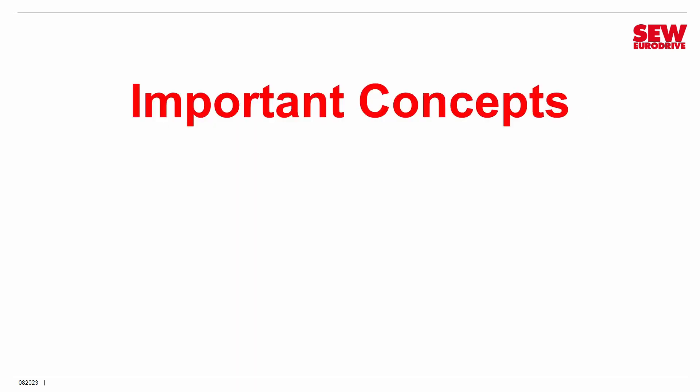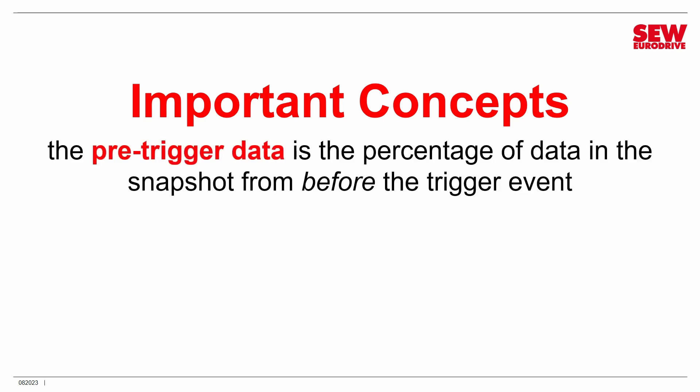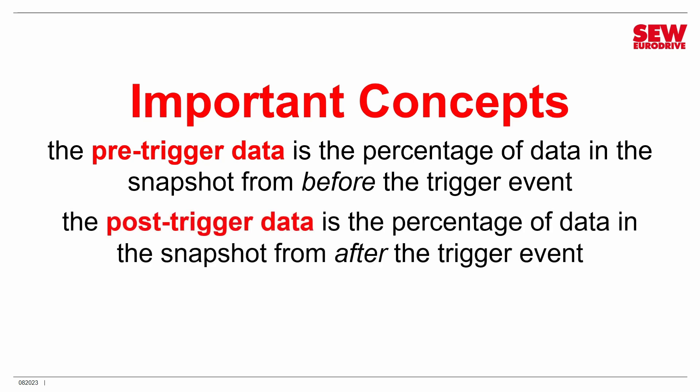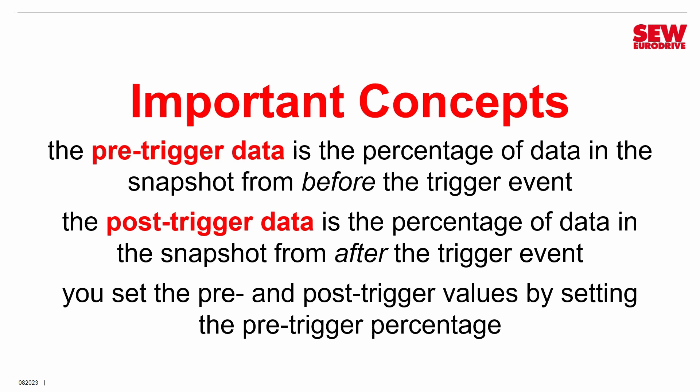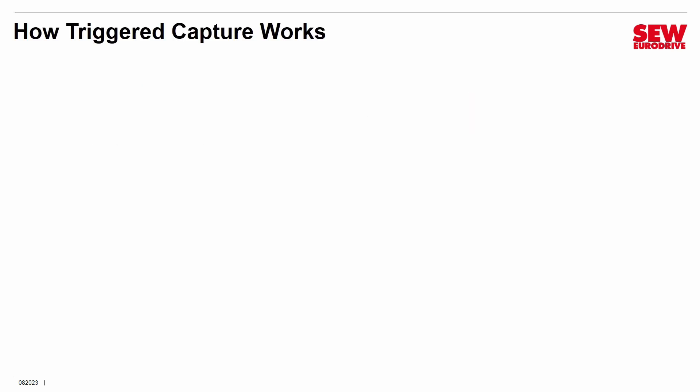Some very important concepts: the first is pre-trigger data — the percentage of the total snapshot from the time before the trigger event, meaning information from the channels before the trigger happened. Then there is post-trigger data — the percentage from after the trigger event. Pre- and post-trigger data surround the trigger event. You set the pre- and post-trigger values by setting the pre-trigger percentage only; the post-trigger percentage is whatever's left. So if you set the pre-trigger to 10%, the post-trigger is automatically 90%, because they must add up to 100%.